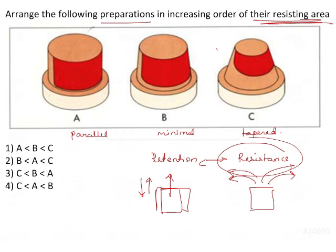So if the taper is more, then the ease of dislodgement of the crown is definitely more. If the taper is less, then the walls will interfere and it will not allow the crowns to dislodge.